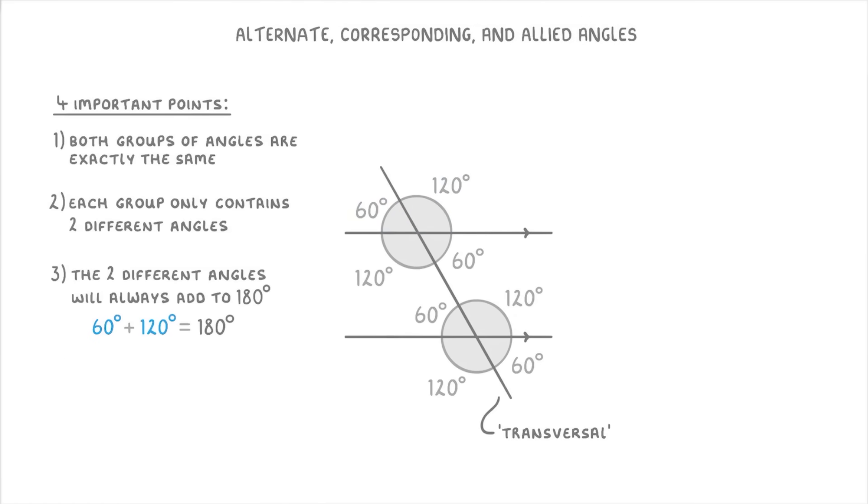And the last point is that vertically opposite angles are always the same. For example, these two 60 degree angles are considered vertically opposite, which is why they're both 60 degrees. And likewise, these two 120 degree angles are also vertically opposite.